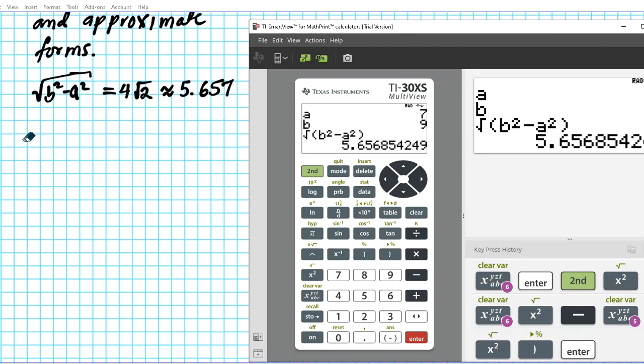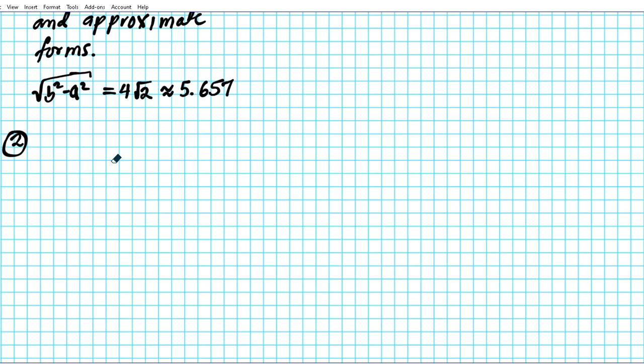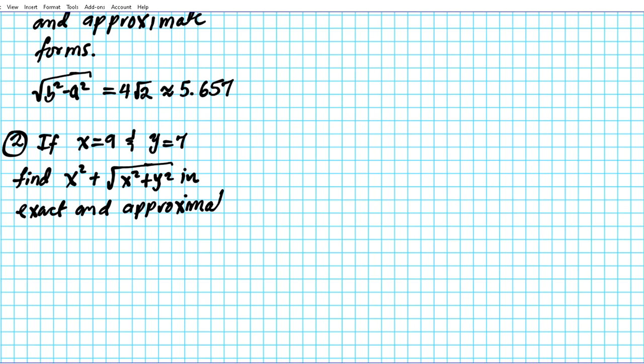Alright. So question number two is a little bit more challenging. So consider the situation. If X is equal to nine and Y is equal to seven, I'd like you to find what is the value of the expression X squared plus the square root of X squared plus Y squared. I'm going to find this in exact and approximate forms. So you're going to give me two answers just like we did with problem number one. Alright. So go ahead and pause this video presentation at this time and work on number two. When you're done, click on the playback button and we are going to reveal what the answer is.